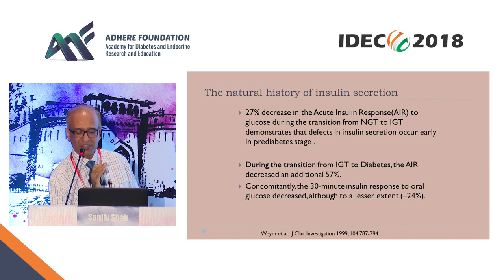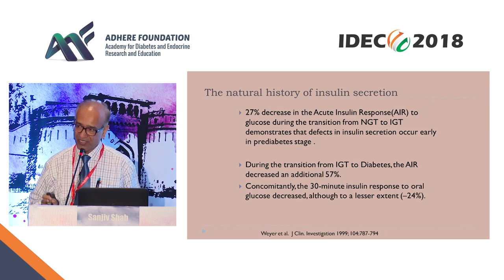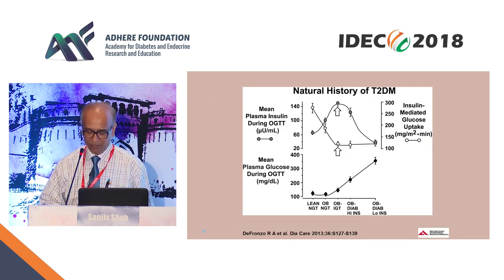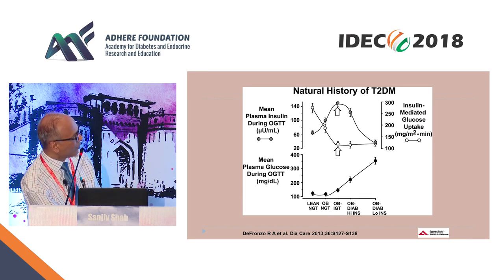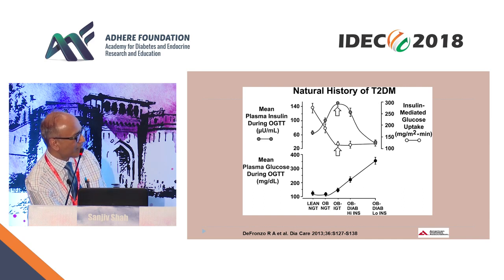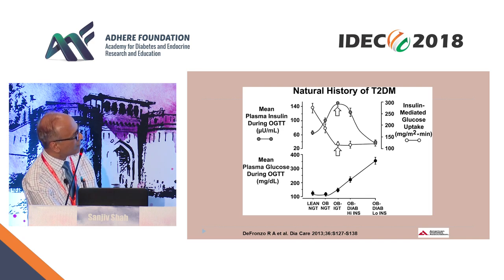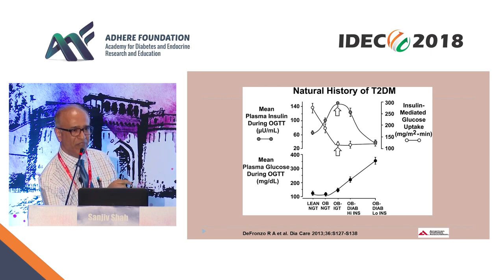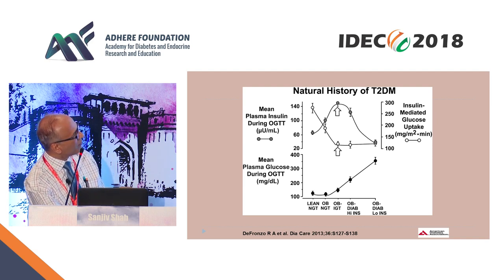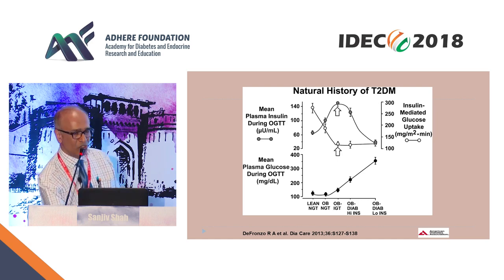In the natural course of development of diabetes, beta cells fail and insulin responses to glucose fail. This was shown by Ralph DeFronzo and reviewed by him in 2013, showing different categories of subjects with glucose levels going up from IGT to obese diabetic with high and low insulin. Insulin-mediated glucose uptake — predominantly in skeletal muscle — falls down. Up to obese NGT, hyperinsulinemia compensates and prevents diabetes or glucose from going up. As insulin secretion falls, glucose level will go higher.